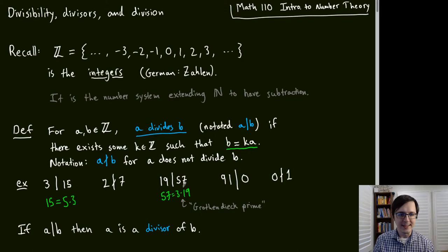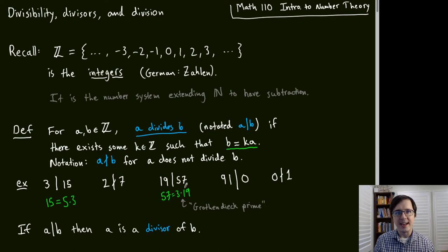Grothendieck was a mathematician who revolutionized algebraic geometry and infamously disliked concrete examples. One time someone asked him to give an example of a theorem involving a prime number, and Grothendieck simply said 'let P be 57,' having no idea it was not actually prime.